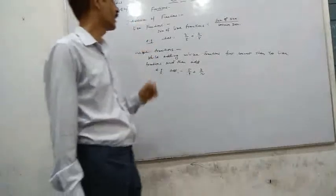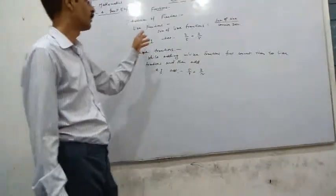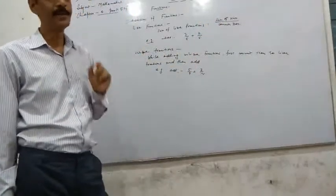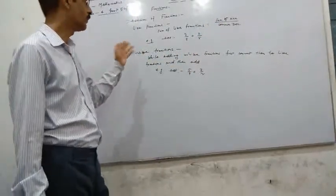Number 1: Addition of fractions. Like fractions. Sum of like fractions is equal to sum of numerator divided by common denominator. See one example here.